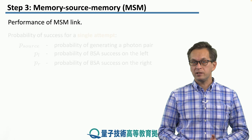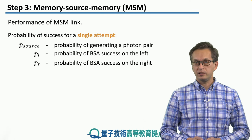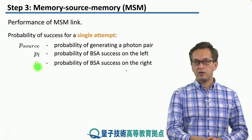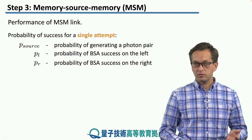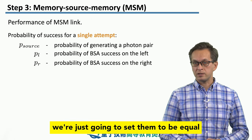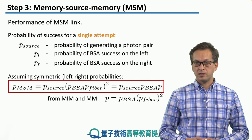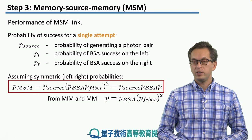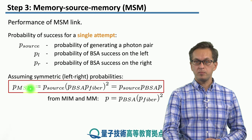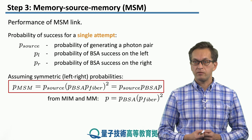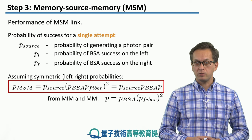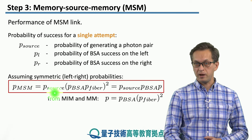The performance of the MSM link can be calculated in the following way. We need three probabilities. We have to include the probability that we can actually generate a photon pair at the source, given by P-source. We can also have different probabilities of BSA success on the left node and on the right node, although in our analysis we set them equal for simplicity. The probability of successfully establishing an entangled link for MSM architecture requires BSA success twice — that's why we have P_BSA squared — and two photons arriving from the source, one to the left node and one to the right node, hence P_fiber squared. We multiply this whole expression by P-source.